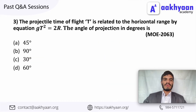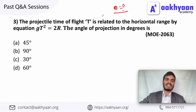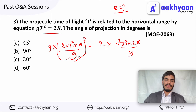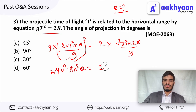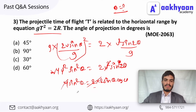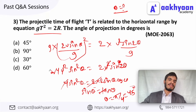In the next problem, the projectile's time of flight T is related to the range R. We write g T squared equal to 2R. The total time of flight is 2u sin theta divided by g. So T squared equals 4u squared sin squared theta divided by g squared. The range R equals u squared sin 2theta divided by g, which is 2u squared sin theta cos theta divided by g. Solving this, sin theta divided by cos theta equals 10/4, so tan theta equals 5/4. This is the correct option.